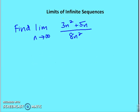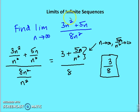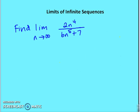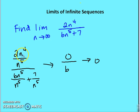Try this one on your own: (3n² + 5n) / 8n². Divide by n squared — the highest power in the denominator. We're left with (3 + 5/n) / 8. As n goes to infinity, 5/n goes to 0, leaving 3/8. For the next problem: 2n⁴ / n⁵. Divide by n⁵; we get 2/n over 6. As n goes to infinity, 2/n goes to 0, so we're left with 0/6, which equals 0.